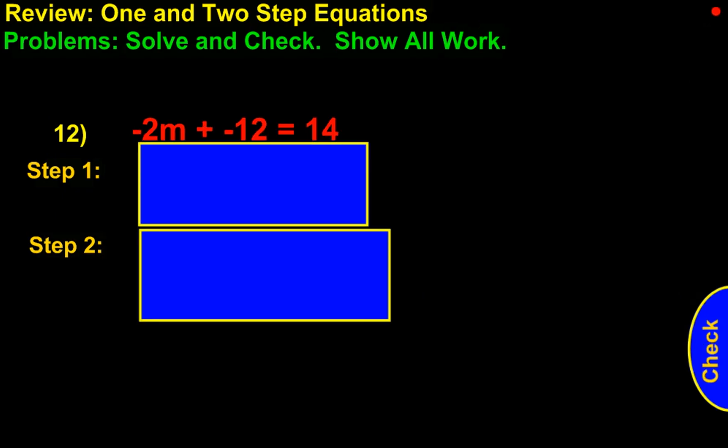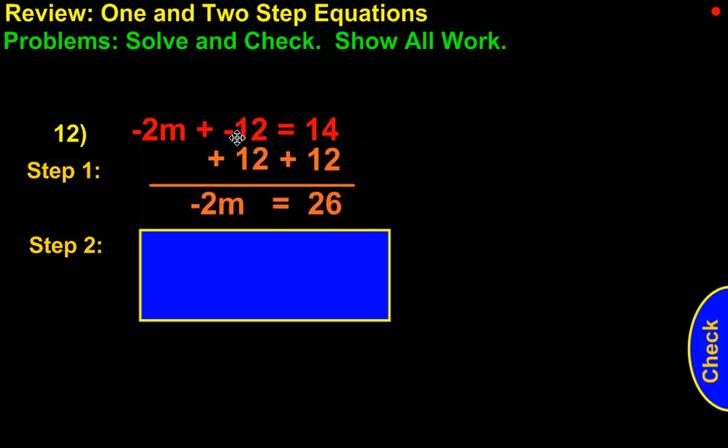The last problem we're looking at tonight is number 12. We have negative 2m plus negative 12 equals 14. This double sign should jump out at you. One of the first things we need to do is fix that. If it's positive and negative, it becomes a negative. So this is negative 2m minus 12 equals 14. We add 12 to both sides. That brings the negative 2m down, and 14 and 12 is 26.